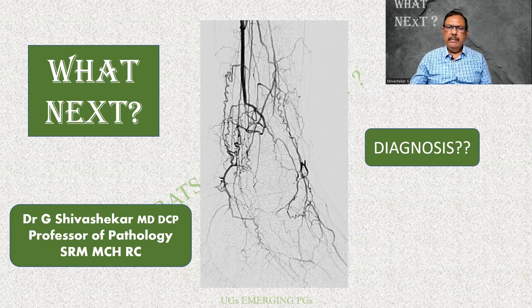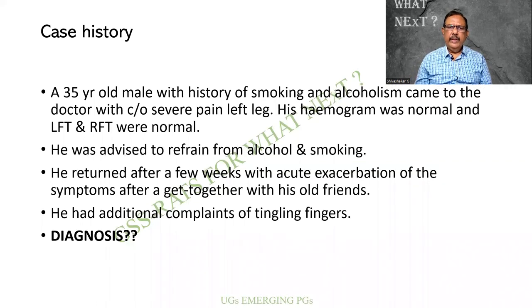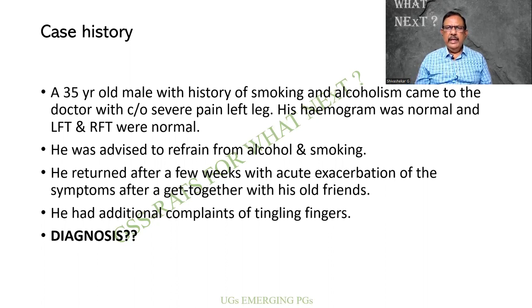It will be difficult, but let us see the history. A 35-year-old male with a history of smoking and alcoholism came to the doctor with complaints of severe pain in the limb. His hemogram was normal; liver functions and renal functions were also normal. The doctor advised him to refrain from alcohol and smoking. He returned after a few weeks with acute exacerbation of the symptoms after a get-together with his old friends. He had additional complaints of tingling sensation in his fingers. What is your diagnosis?